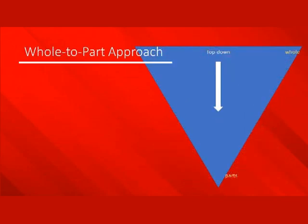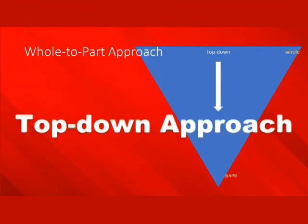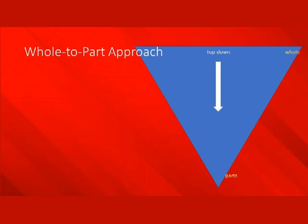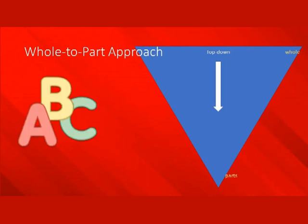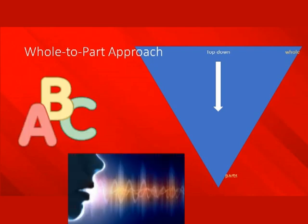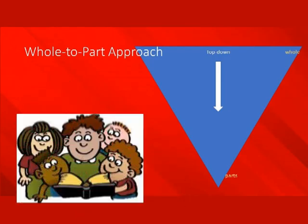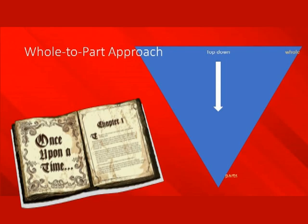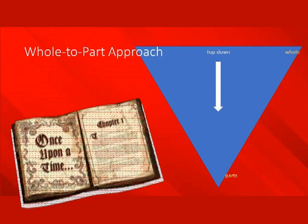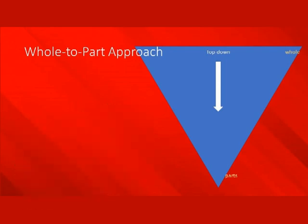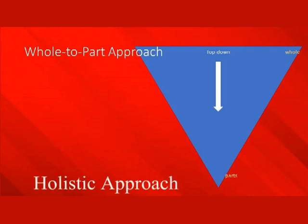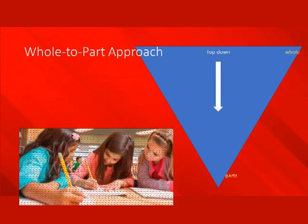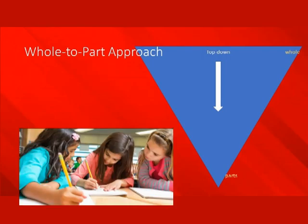In the whole-to-part or top-down approach, students start at the top of the reading process and proceed downward to letters and sounds. Instruction is initiated by reading whole stories with teacher assistance. Through reading whole stories and by using their knowledge of language patterns, students learn individual printed words and letter-sound relationships. Holistic approaches are based on a top-down view of reading. Students learn to read and write by being immersed in meaningful literacy activities.